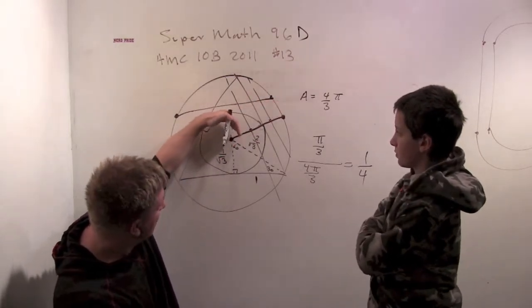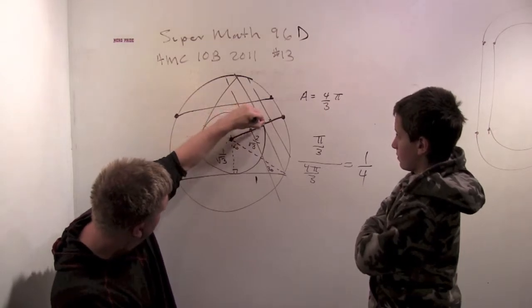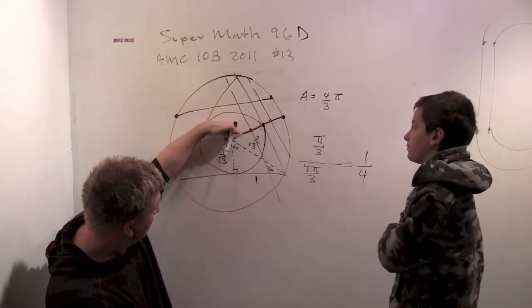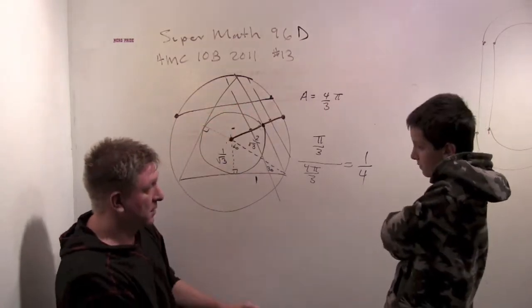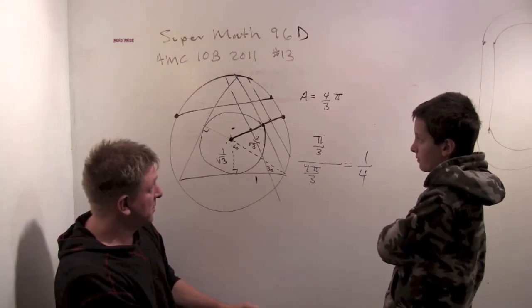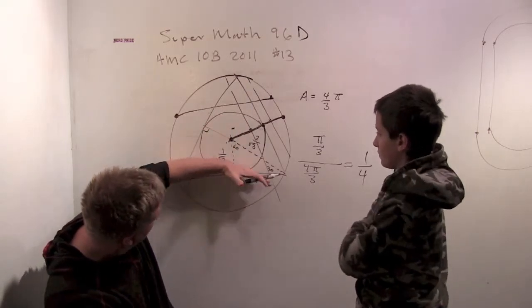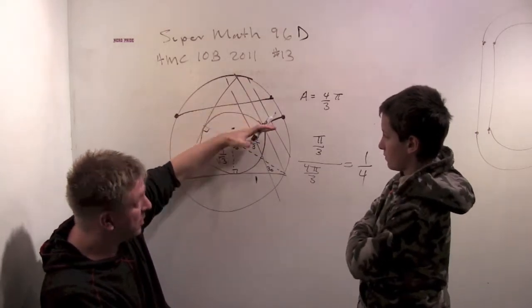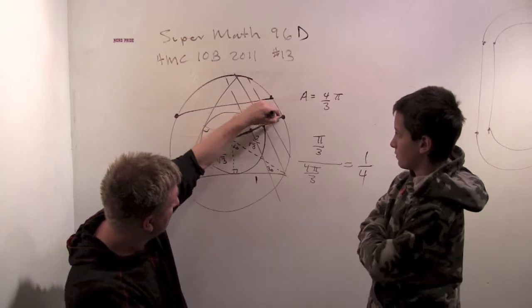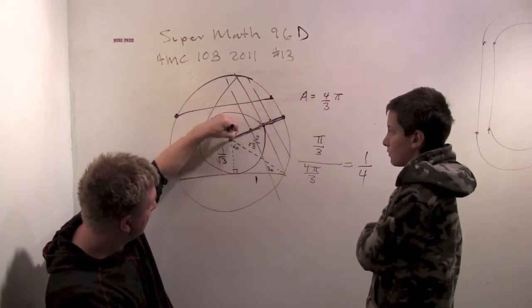So all I have to do is say, does that center of the chord land before here or does it land outside there? So it's just when I rotate the triangle around to line it up with the chord, either the center of that chord is on this part of this line or it's on this part of this line.